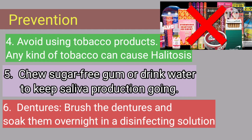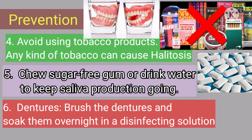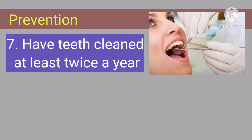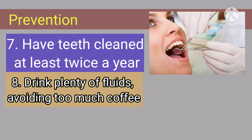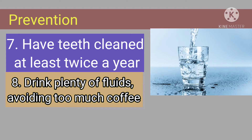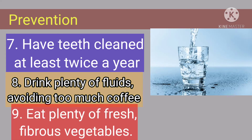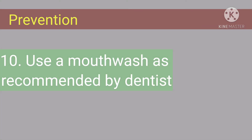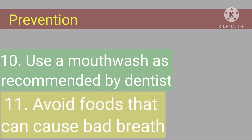Avoid using tobacco products — any kind of tobacco can cause halitosis. Choose sugar-free gum or drink water to keep saliva production going. Dentures should be brushed and soaked overnight in a disinfecting solution. Have teeth cleaned at least twice a year. Drink plenty of fluids, avoid too much coffee, eat plenty of fresh fibrous vegetables, use a mouthwash as recommended by a dentist or pharmacist, and avoid foods that cause bad breath.